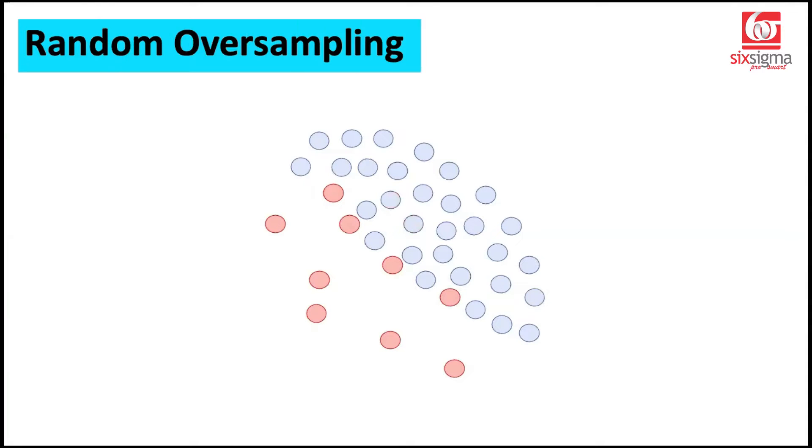The other way is oversampling. So let's say this is the scenario where we started with. And now to give equal emphasis to the class red, can we oversample some of the existing observations? It means that you do multiple selections of the existing observations.